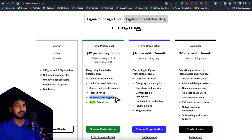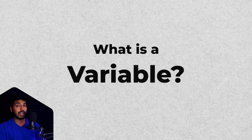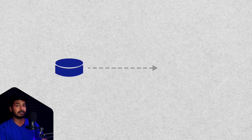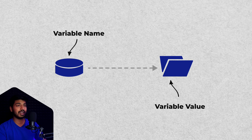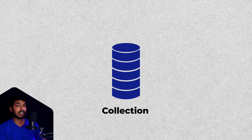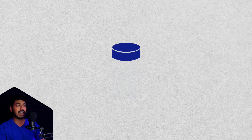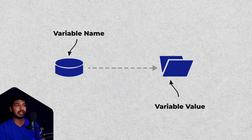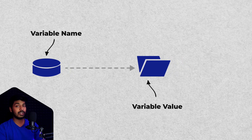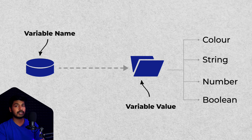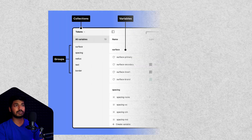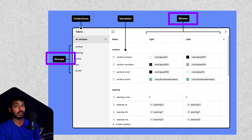You won't be able to use this on your drafts — you need to move the file to a teams project. Since we're getting started with advanced prototyping, we need to understand what variables are. Variables are nothing but a storage space where you can store something, and that storage space has a name. In Figma you have collections, and each collection has separate variables. Think of it like a box with named spaces where you assign a name and a value. That value can be one of four types: a color, a string, a number, or a boolean. There are also groups and modes, which we'll understand as we create the prototype.